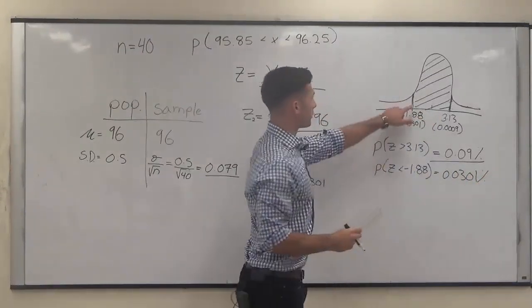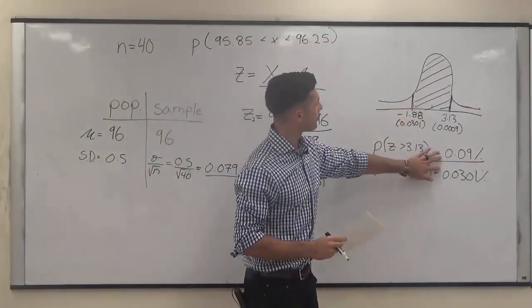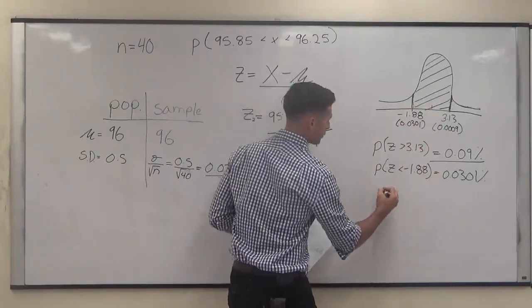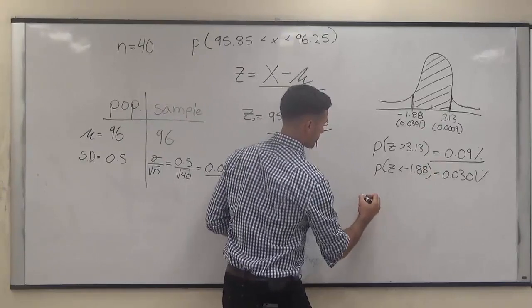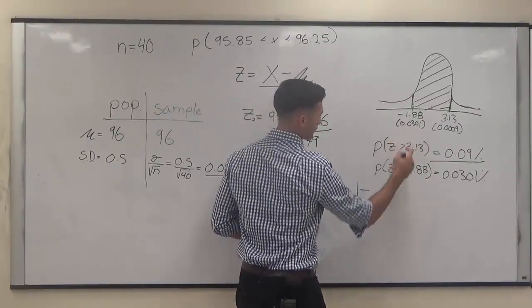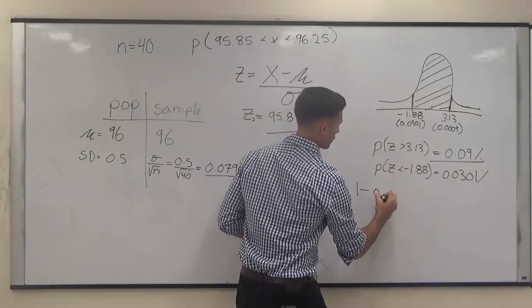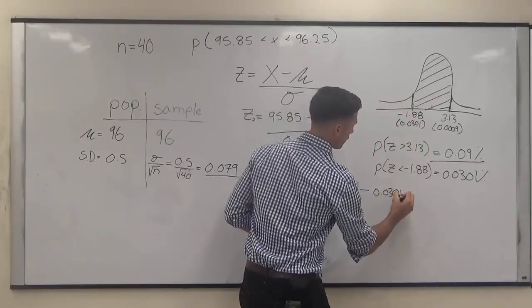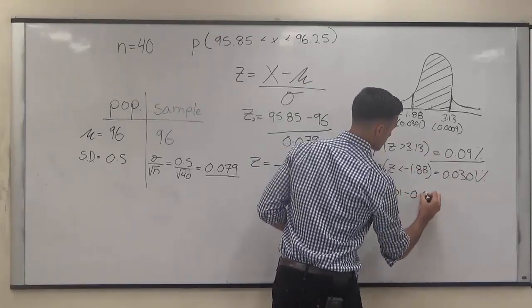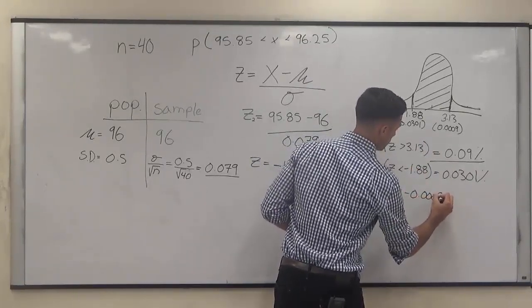So to find what's in the middle, because now we've got both of these numbers to correspond to these tails, we have to do 1 minus both of these scores. So 1 minus this table score of 0.0301 minus this table score 0.0009.